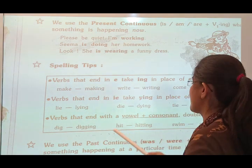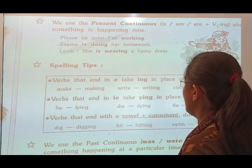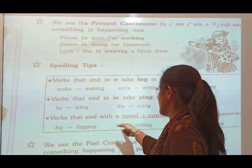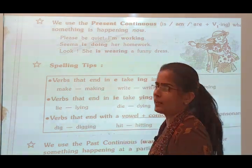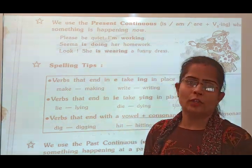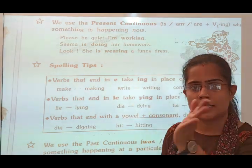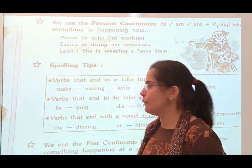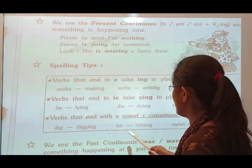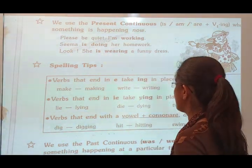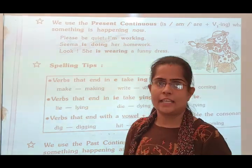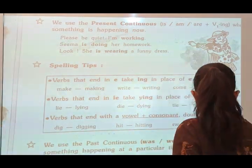For example, 'hit' — h-i-t — ends with a consonant and before it there is a vowel. So when I convert it to the -ing form, I double the consonant: h-i-double t-i-n-g, giving 'hitting'.